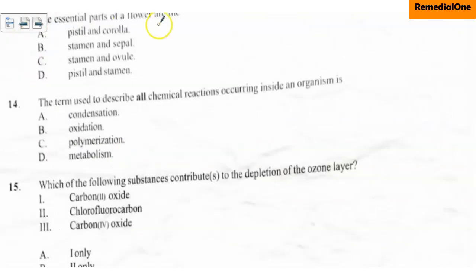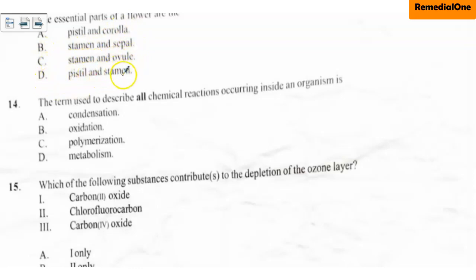Question thirteen: the essential parts of a flower are A. pistil and corolla, B. stamen and sepal, C. stamen and ovule, D. pistil and stamen. The correct option is D — pistil and stamen. These are the essential parts of a flower.